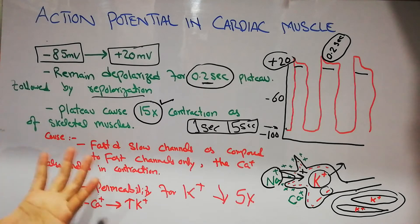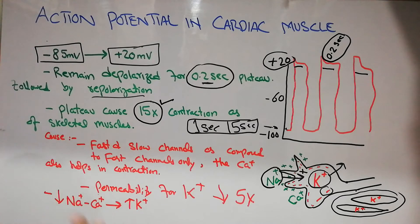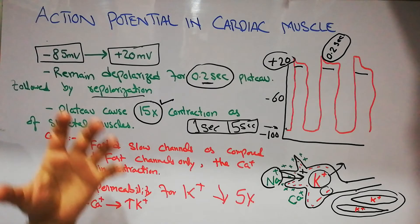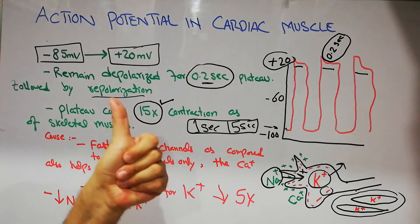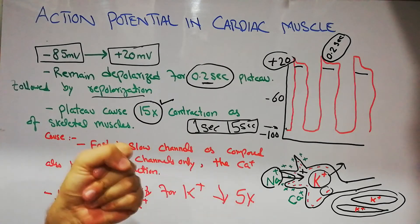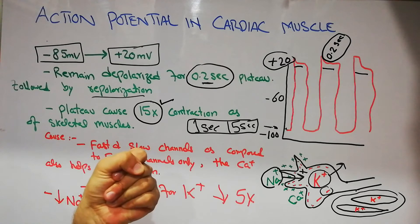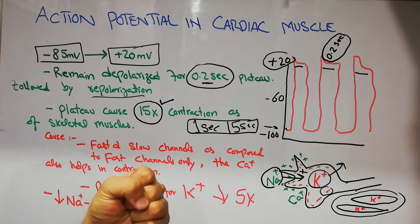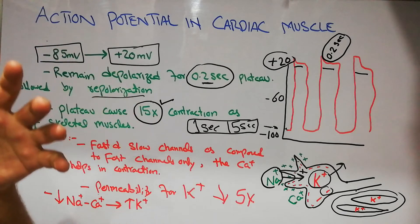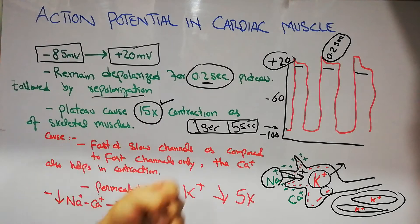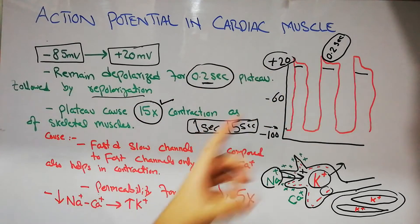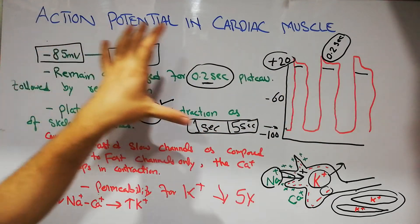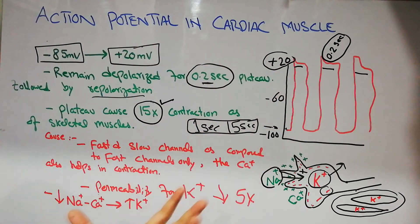What is the significance of this plateau? We know that the heart is pumping blood, and during pumping the heart contracts and blood is expelled, but the heart does not relax rapidly — it has to remain contracted for a certain period of time. To allow this, nature has added this plateau to the action potential of cardiac tissue.